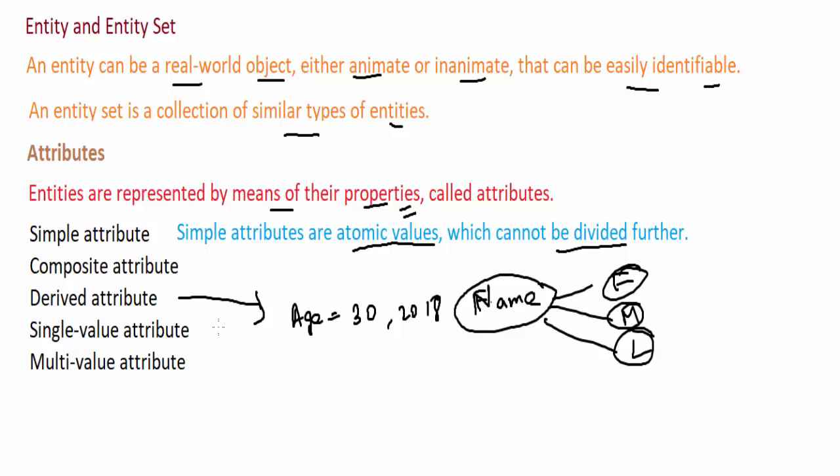Multi-valued attribute - suppose a user or anybody can have different phone numbers, so that is a multi-valued attribute.